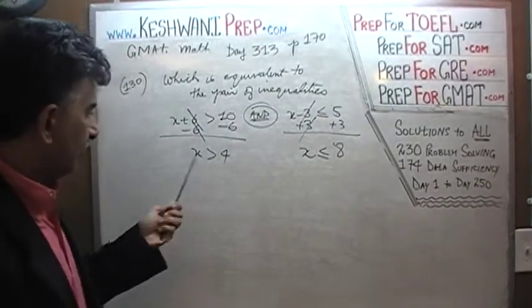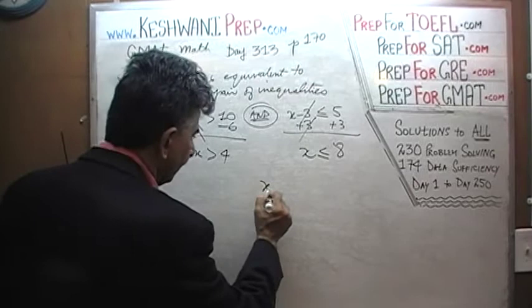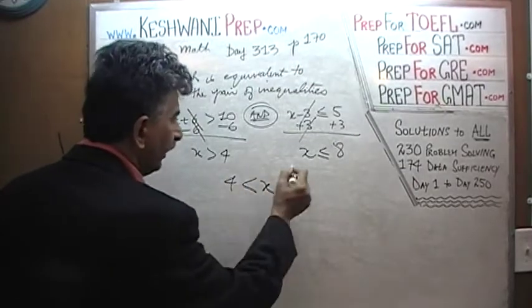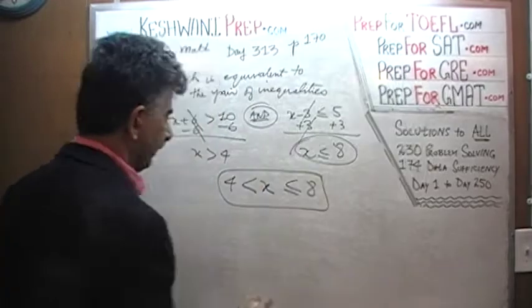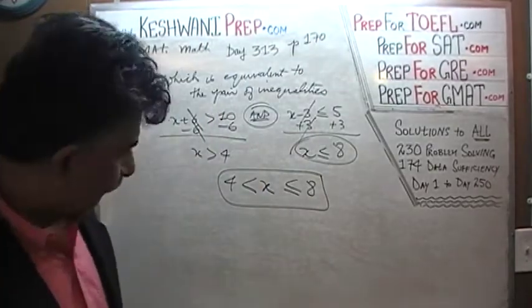There you go. So that's it, we are done. It has to be more than 4. So here's our x. It has to be more than 4 and it has to be less than or equal to 8. There you go. Less than or equal to 8. We are done. This is our answer.